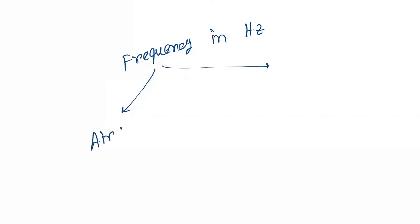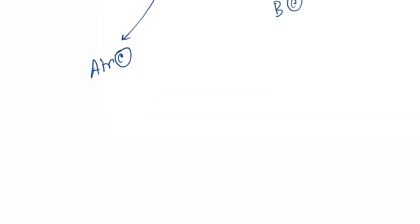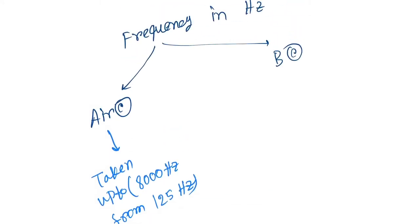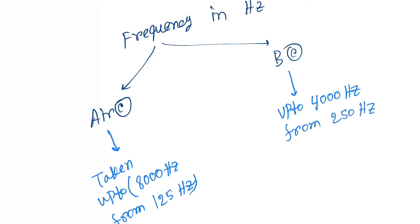Under frequency in Hertz, we take two components: air conduction and bone conduction. Under air conduction, the frequency is taken from 125 Hertz up to 8,000 Hertz. For bone conduction, we take from 250 Hertz up to 4,000 Hertz.